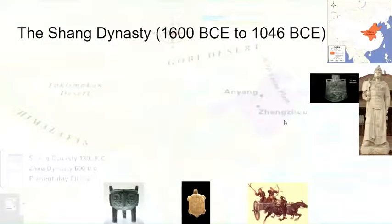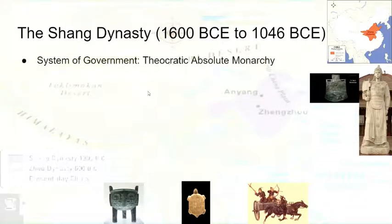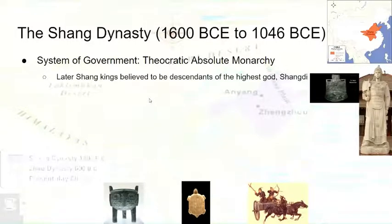Let's talk a bit about the Shang dynasty. Those who covered the Shang dynasty earlier in our year should have the advantage, because they should know a bit about it. The system of government is both a theocracy and an absolute monarchy — a theocratic absolute monarchy in which the king is basically the descendant of the highest god and represents the god and religion itself. They are the high priest essentially, as well as the ruling king. Later Shang kings believed that they were descendants of the highest god, Shang Di. Shang Di, by the way, is now the term for basically the Christian God.